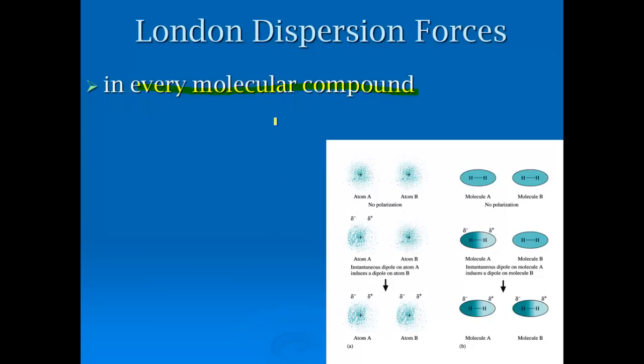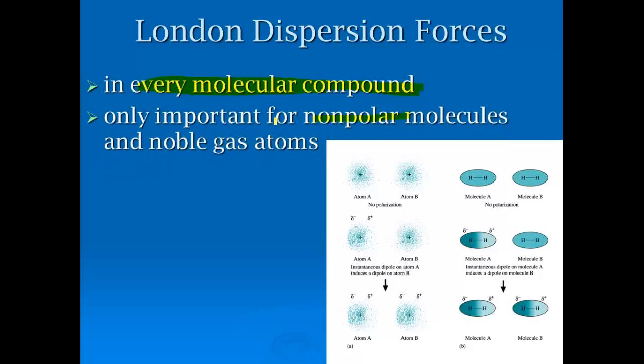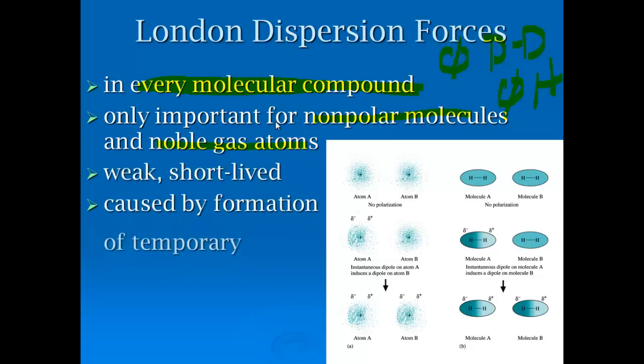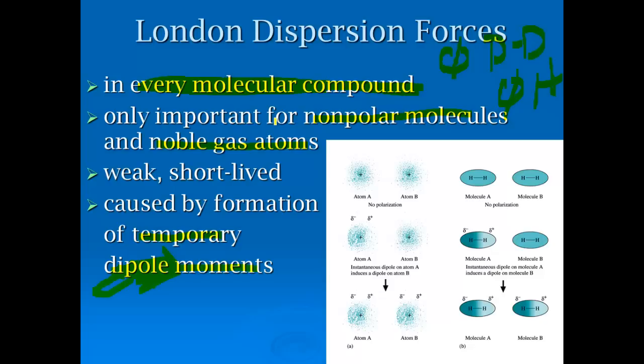London dispersion forces are technically present all the time. However, they're only important for nonpolar molecules and noble gas atoms that do not have dipole-dipole and they do not have hydrogen bonding. So they're present all the time, but the only time we have to look at them are when they're nonpolar molecules. And essentially what happens is they're very weak, short-lived, attractive forces that are caused by these formations of temporary dipoles simply because of the fact that the electron is moving around the molecule.